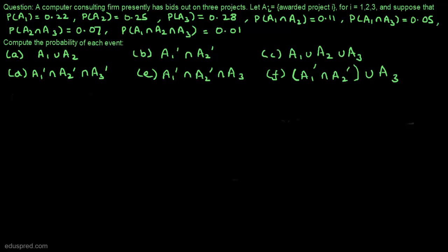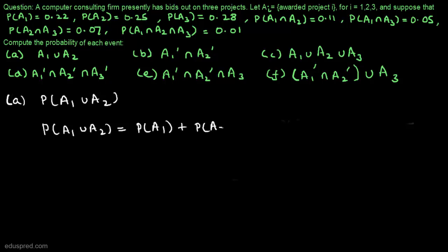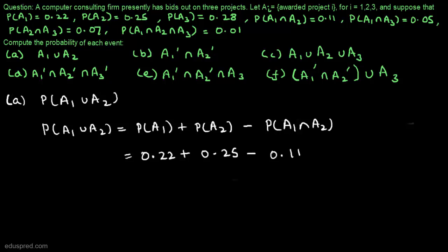In part A, we have to compute the probability of the event A1 union A2. This is quite straightforward — we can use the direct formula: P(A1 ∪ A2) = P(A1) + P(A2) − P(A1 ∩ A2). We are given that this equals 0.22 + 0.25 − 0.11, and solving this, we get 0.36.